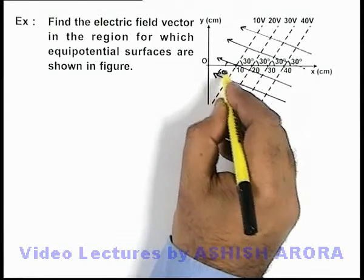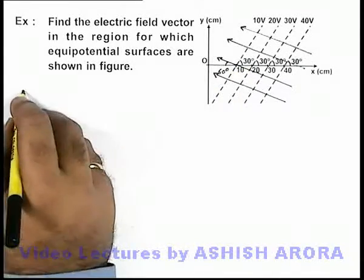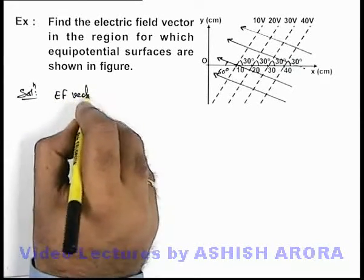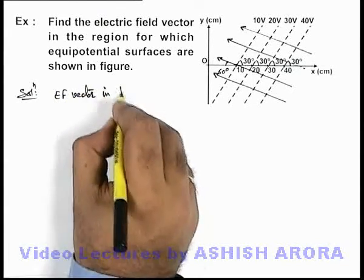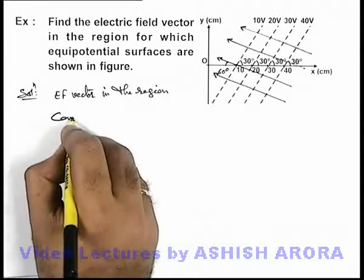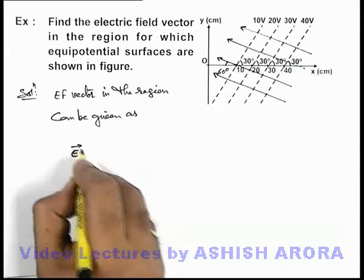So simply here we can write that electric field vector in the region can be given as - this electric field vector we can write in x direction.